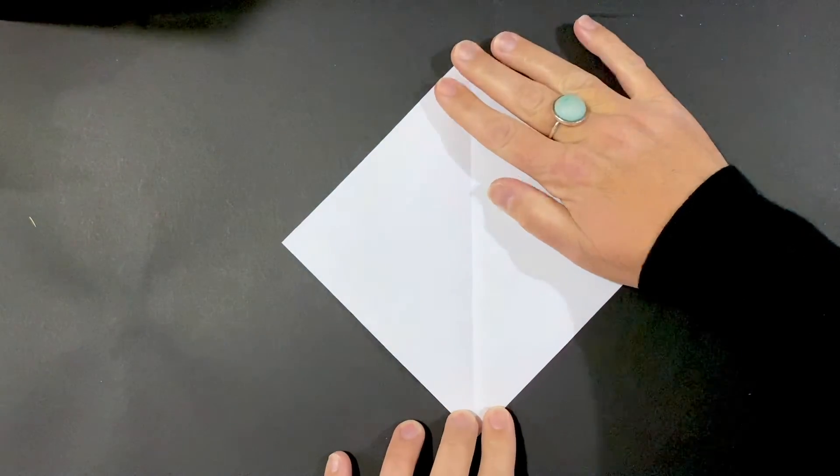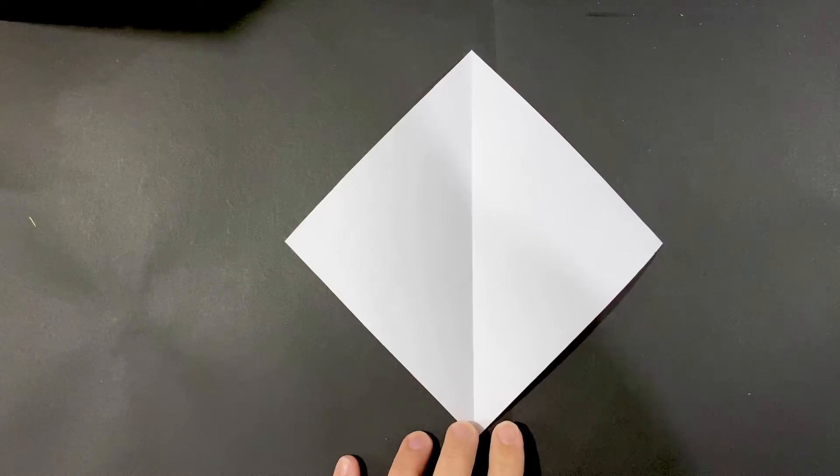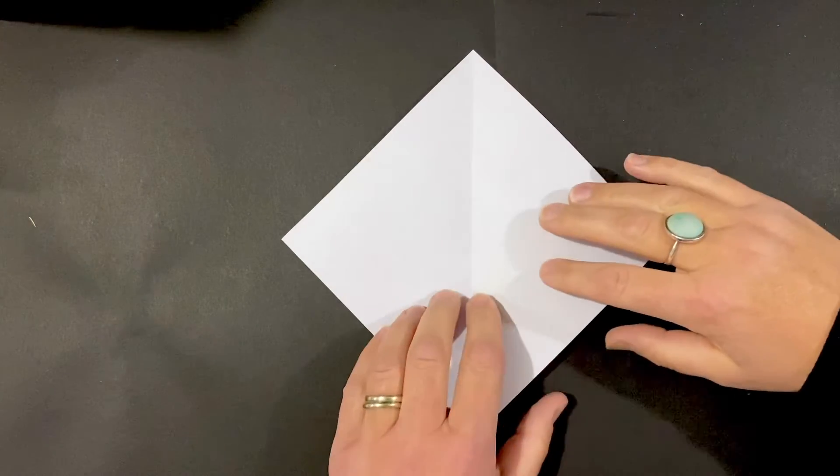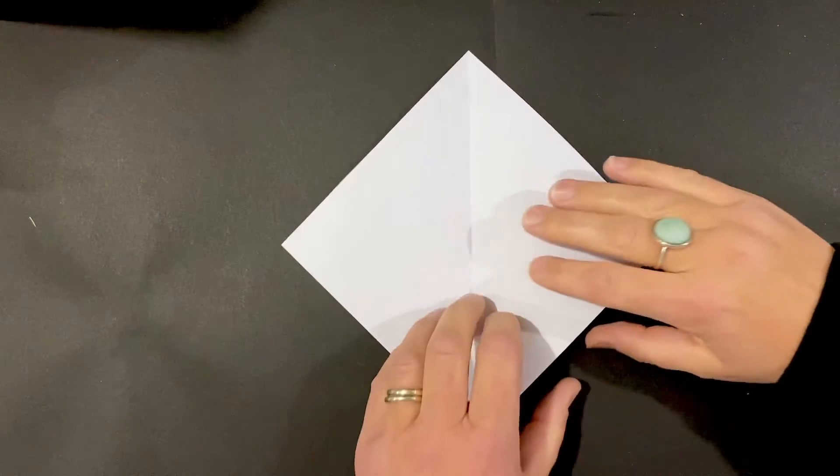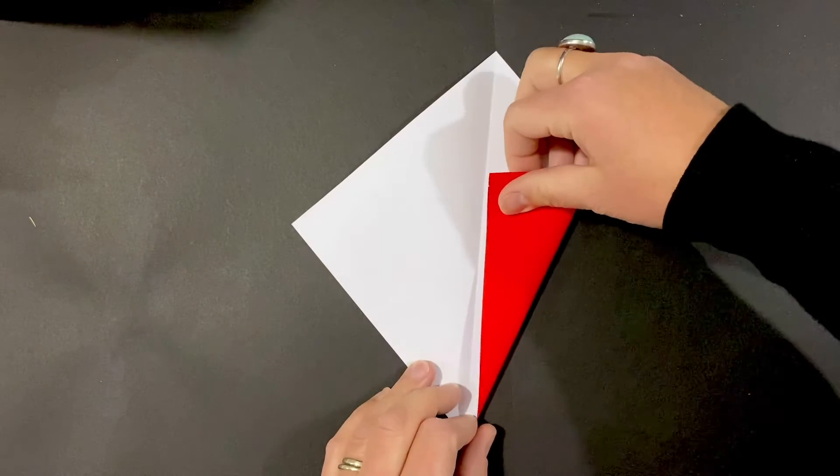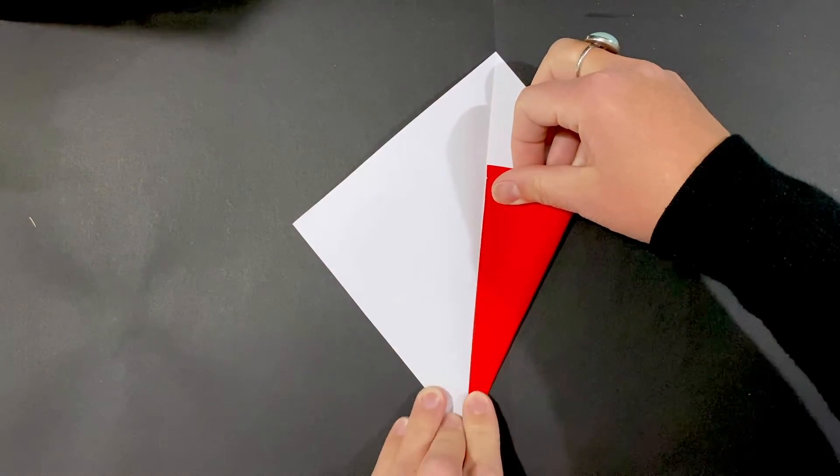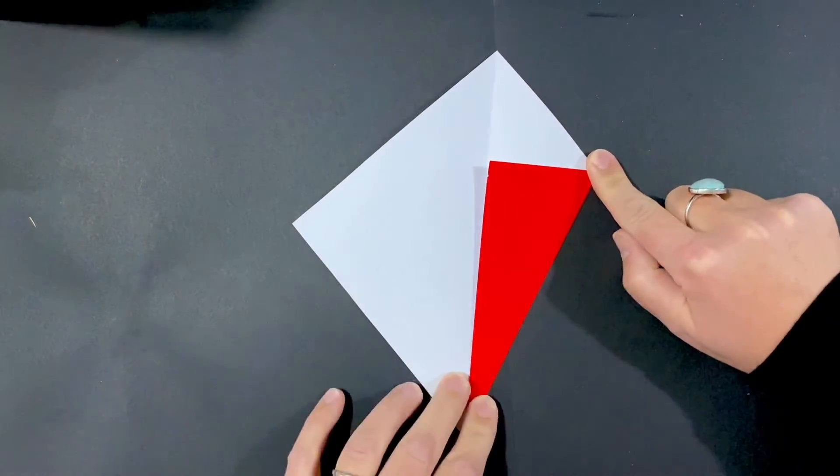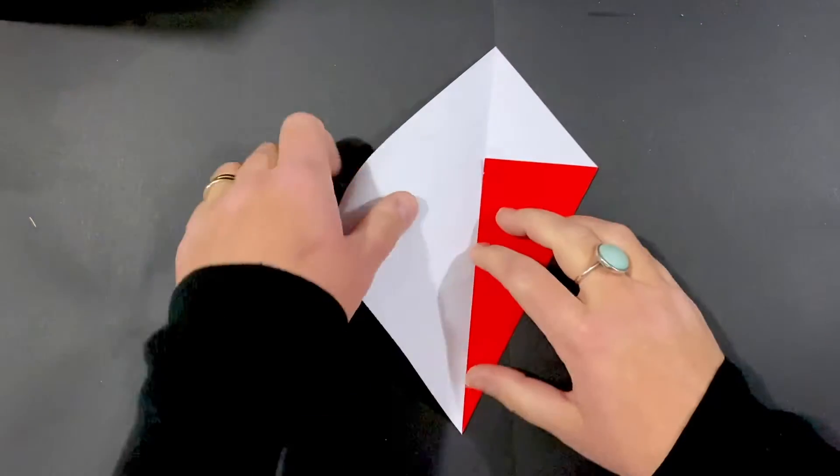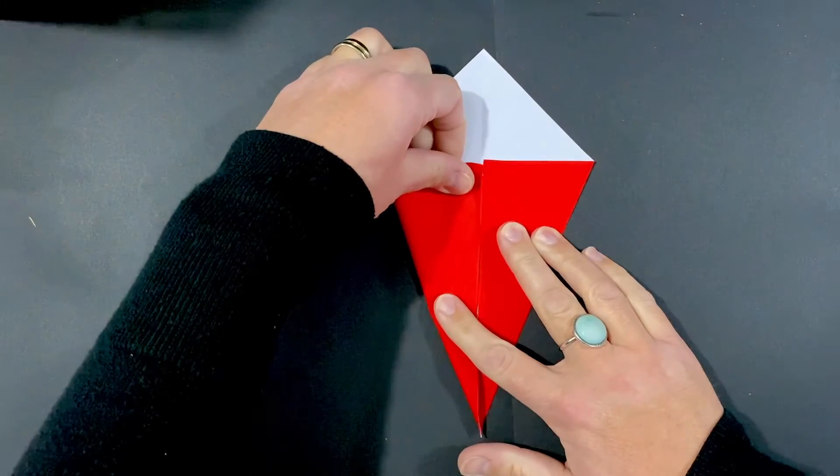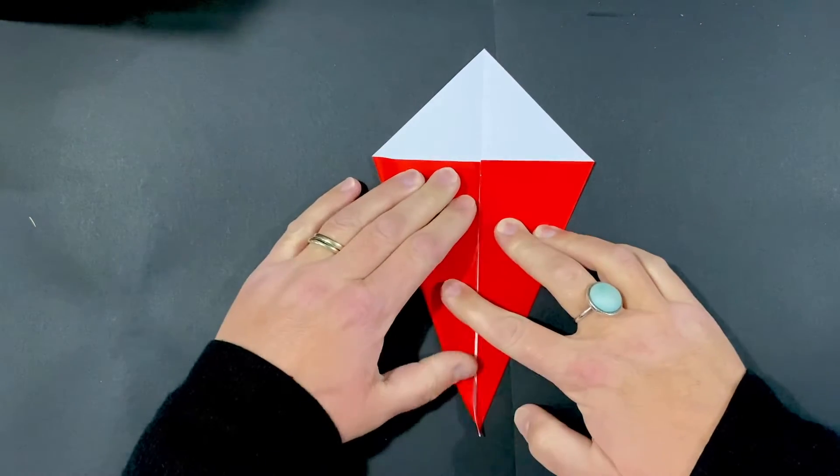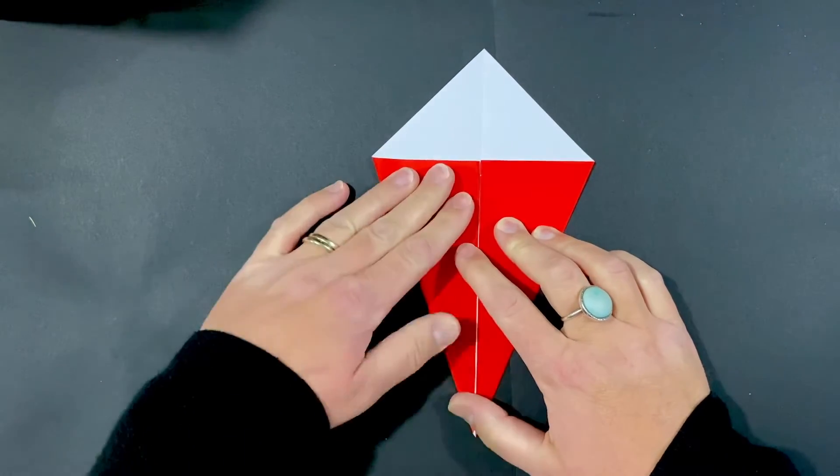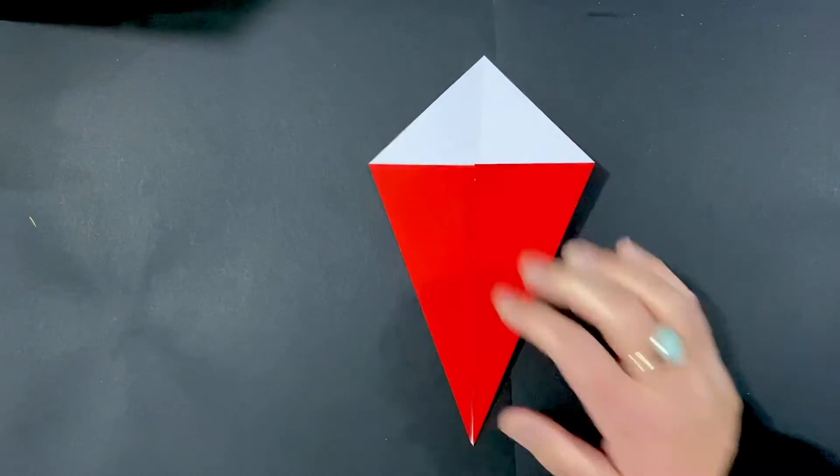We're going to fold the lower left and the lower right diagonals along the edge. So there's the right side and the left side. It kind of looks like a kite now.